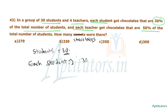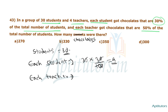The total number of students is 30. 30% of 30 is 9, so each student gets 9 chocolates. Each teacher gets 50% of the total students, and 50% of 30 is 15. So each teacher gets 15 chocolates.